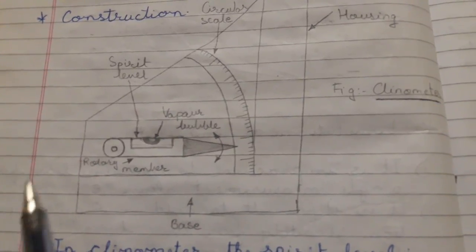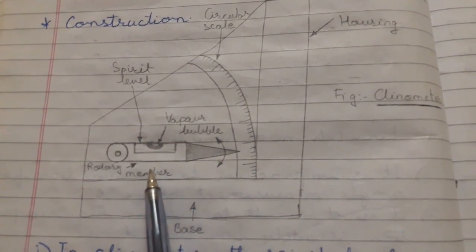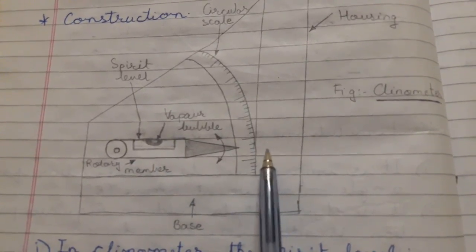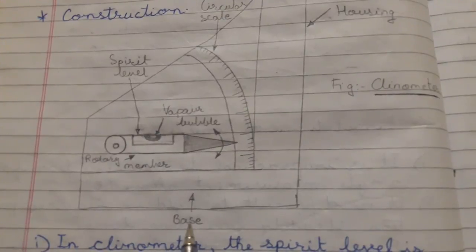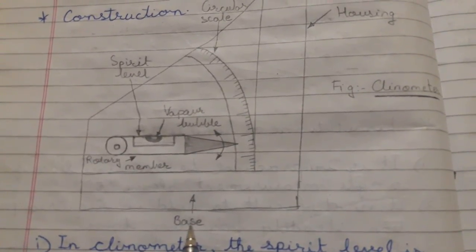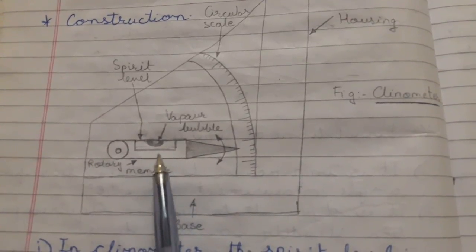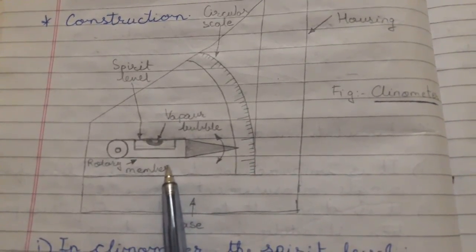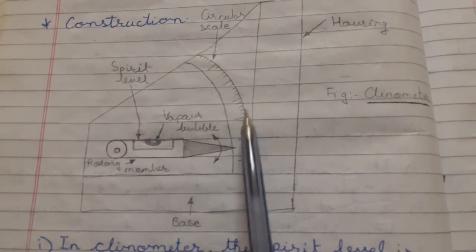Regarding the construction, in Clinometer, the spirit level is mounted in the rotary member carried in the housing. One surface of the housing acts as a base of the instrument. On the housing, there is a circular scale. The angle of inclination of the rotary member relative to the base can be measured using the circular scale.